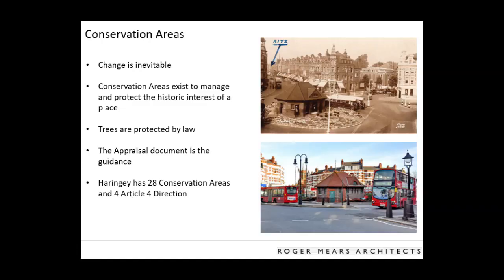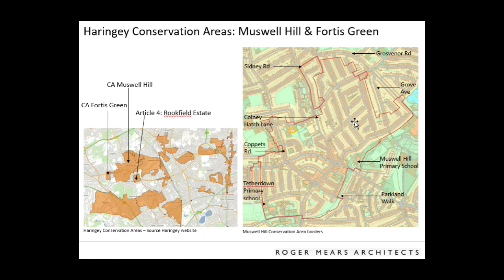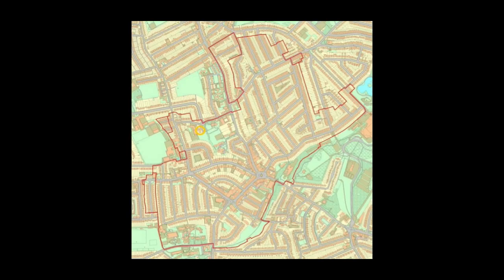Haringey has 28 conservation areas, and each council has a number of identified areas. It also has four Article 4 directions. Article 4 direction is a sort of conservation area but with further restrictions on permitted development rights — things you could normally do without permission are actually restricted. Our conservation area is Muswell Hill, and next to us is the Rockfield Estate, which has an Article 4 direction.